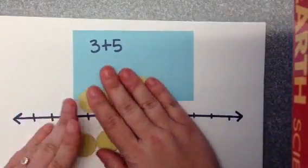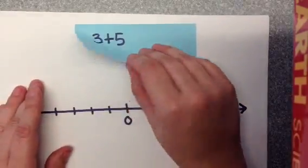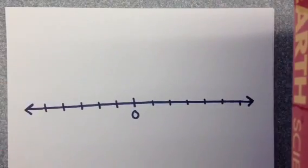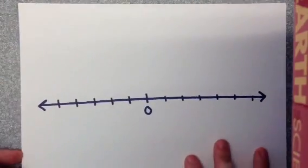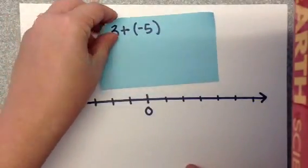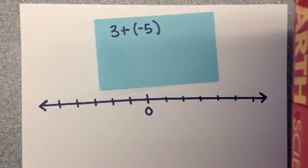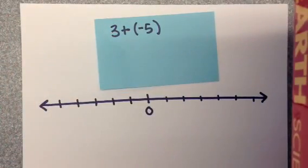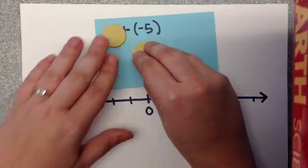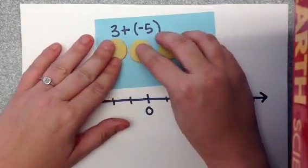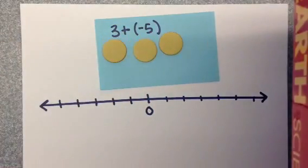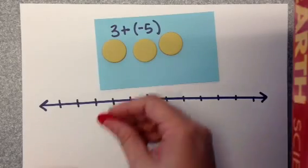And you'd want to start with an example like that. Another example would then be to add a negative. So 3 plus negative 5. Again, you can start with the 3 counters. That's those positive ones. And then you would add 5 negative counters, which are the red side.